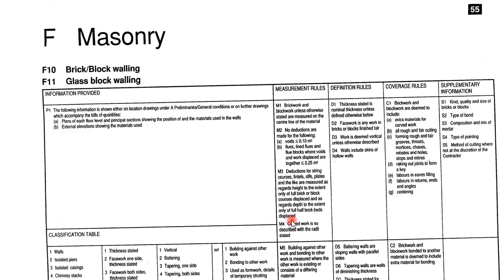This will assist the quantity surveyor. Whenever you are giving the description, you need to state the thickness of the wall — whether it's a one brick wall, half brick wall, or one and a half brick wall. You state the thickness. Also, for the supplemental information that needs to be supplied under the description, you state the kind, quality, and size of the bricks or blocks, the type of bond — how are the bricks going to be arranged — whether it is English bond, stretcher bond, Flemish bond, or any other bond that will look attractive or be stronger in construction.